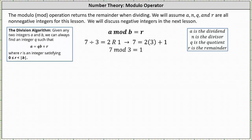Let's first review the division algorithm. Given any two integers a and b, we can always find an integer q such that a is equal to q times b plus r, where r the remainder is greater than or equal to zero and less than the absolute value of b. We can determine q and r by performing division where a is the dividend, b is the divisor, q is the quotient, and r is the remainder. Since the modulo operator returns the remainder when dividing, we say a mod b is equal to r, where r is the remainder when a is divided by b.